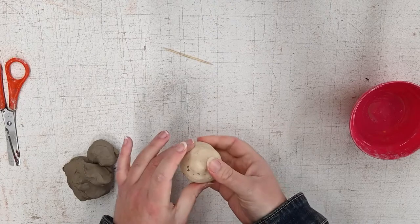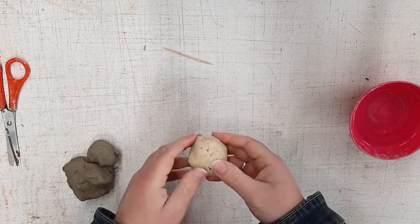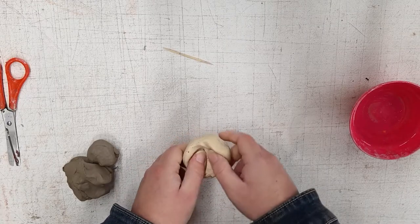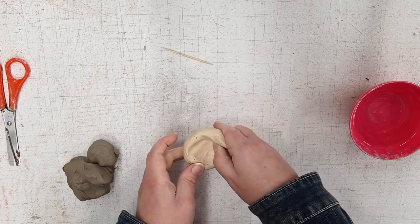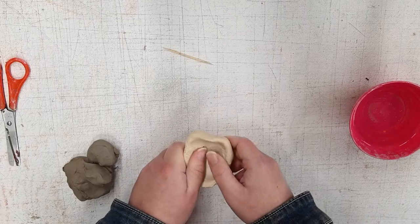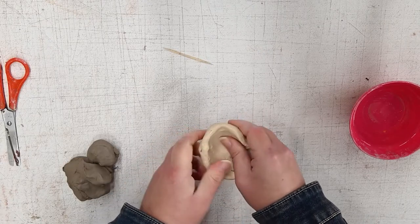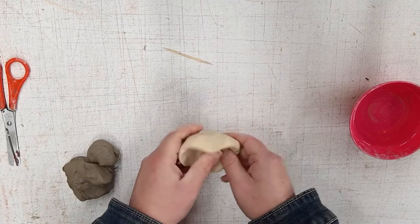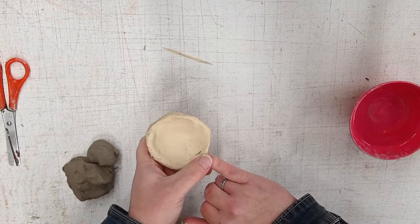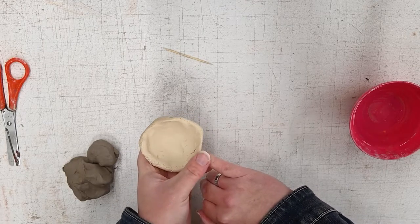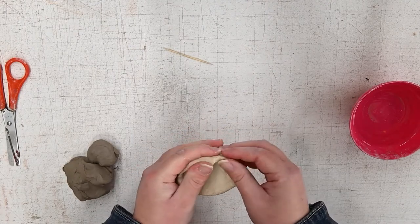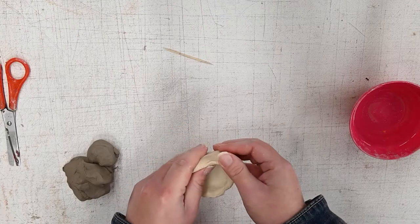So next, we are going to gently push our thumbs into the center of the clay and begin shaping our monster mouth by moving or pinching the clay around the sides to create a bowl shape. We want to make sure that the sides and the bottom of our monster mouth are about a quarter inch in length or about half the size of your pinky nail. Because if they're any thinner than that, they can crack and break when they dry and then our projects will be ruined.